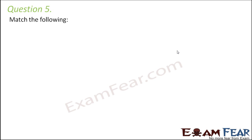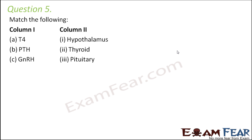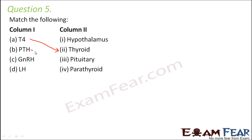Question number five: match the following. T4 is a thyroid hormone, so it maps to the thyroid. PTH (parathormone) is secreted by the parathyroid, so it matches parathyroid. GnRH — gonadotropin releasing hormone — is a releasing hormone secreted by the hypothalamus, so it matches hypothalamus. LH (luteinizing hormone) is secreted by the pituitary, so it matches the pituitary.